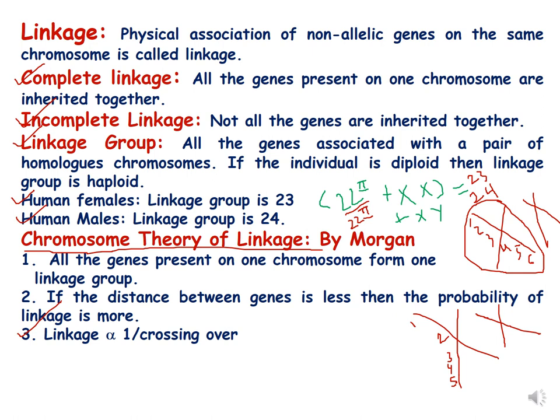Another term is linkage group — it is all the genes associated with a pair of homologous chromosomes. For a diploid organism, the linkage group is haploid in number. In humans, females have a linkage group of 23 because there are 22 pairs of autosomes plus 2 X chromosomes, making 23. In males, the linkage group is 24 because 22 pairs of autosomes plus 1 X plus 1 Y makes 24.